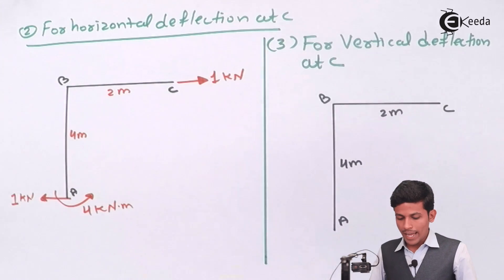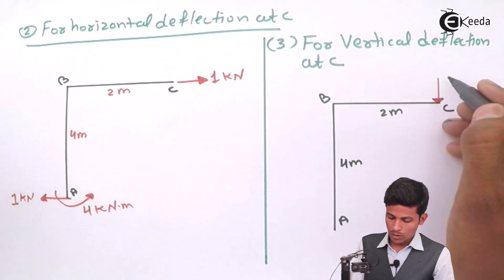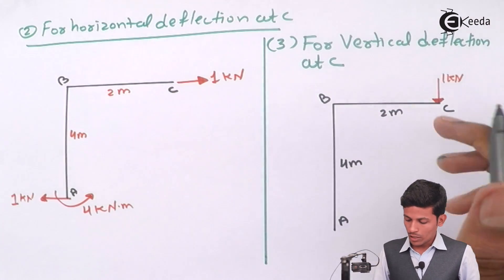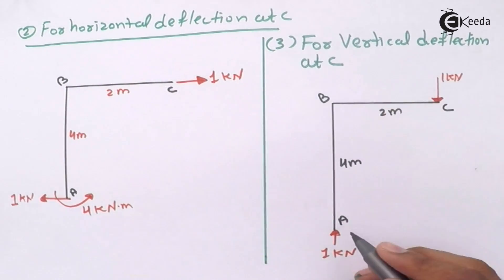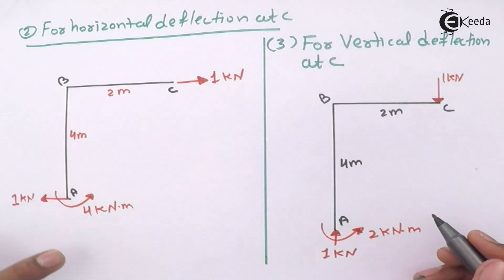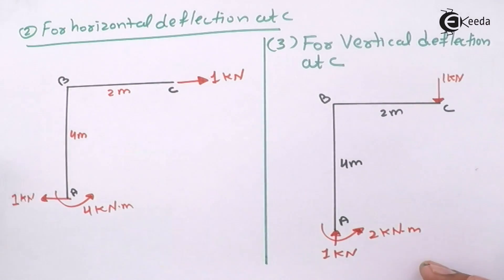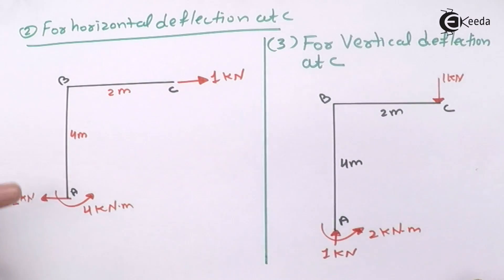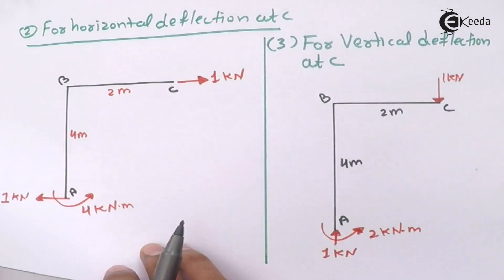For vertical deflection at C, apply 1 kN downward at C. Balancing gives 1 kN upward reaction, and the moment is 1 × 2 = 2 kN·m. You can also take a section and find bending moments directly. Now we have balanced all parts and move to the table — which is the fourth part of the solution.